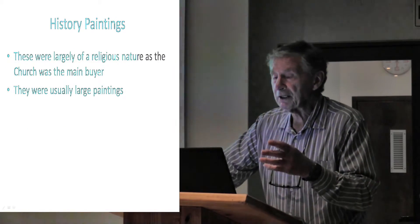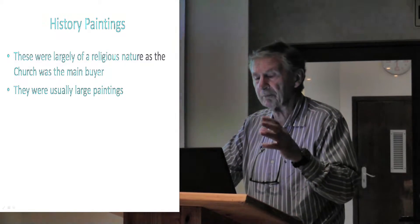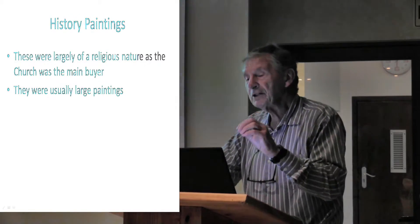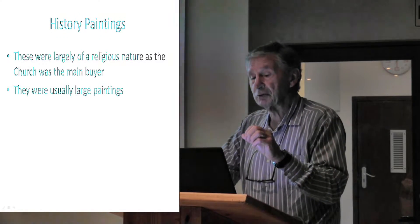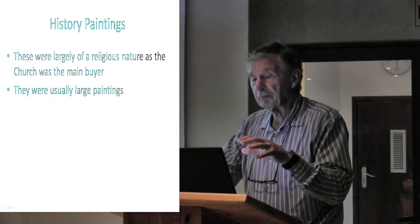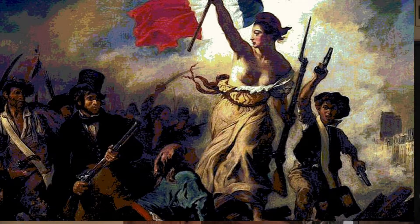The history paintings were largely of a religious nature and some war-type situations. The reason being, the church was the main buyer. The Roman Catholic Church at that stage was all-powerful. These were usually large paintings. Here we can see the famous French Revolution painting — this is Delacroix, a beautiful, huge painting.